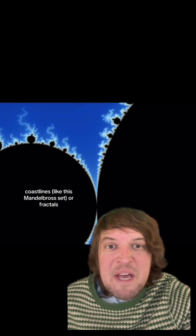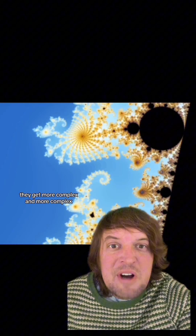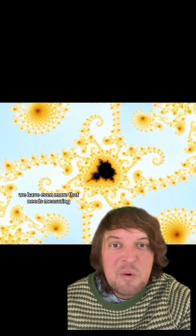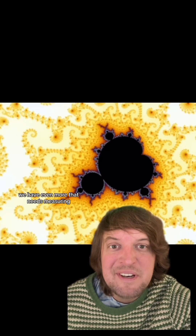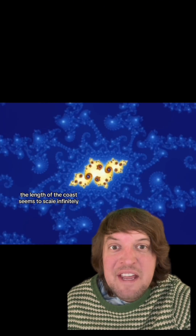Coastlines, like the Mandelbrot set, are fractals — as you zoom in, they get more and more complex. As we keep going for a more precise measurement, we have even more that needs measuring, and the length gets longer and longer. Eventually you're trying to measure the distance between individual water molecules, and at the atomic scale, the length of the coast seems to scale infinitely.